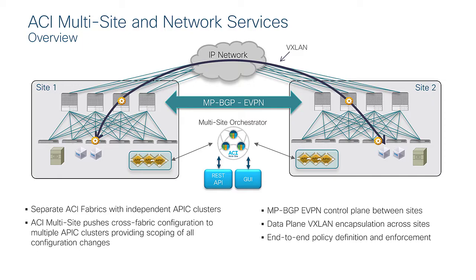In summary, ACI Multisite consists of three components: a VXLAN data plane, an MP-BGP EVPN control plane, and a Multisite Orchestrator at the management plane to provision policies consistently across sites.